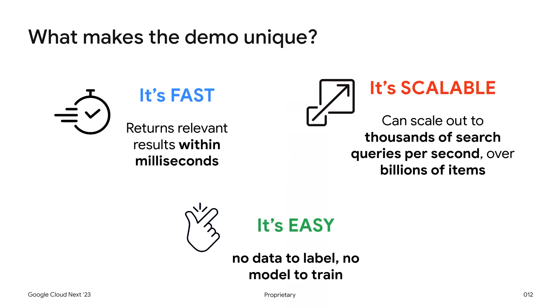What makes that demo so unique? It's fast — you get search results within milliseconds while retaining deep semantic understanding. It scales very well: we used 5.7 million product images for this demo, but that architecture can scale out to billions of products while maintaining the same blazing fast response time and throughput. And third, my favorite: it's easy. There is no data labeling or model training involved. Just bring in your data and the Vertex AI embeddings API and Vector Search will do the work for you.